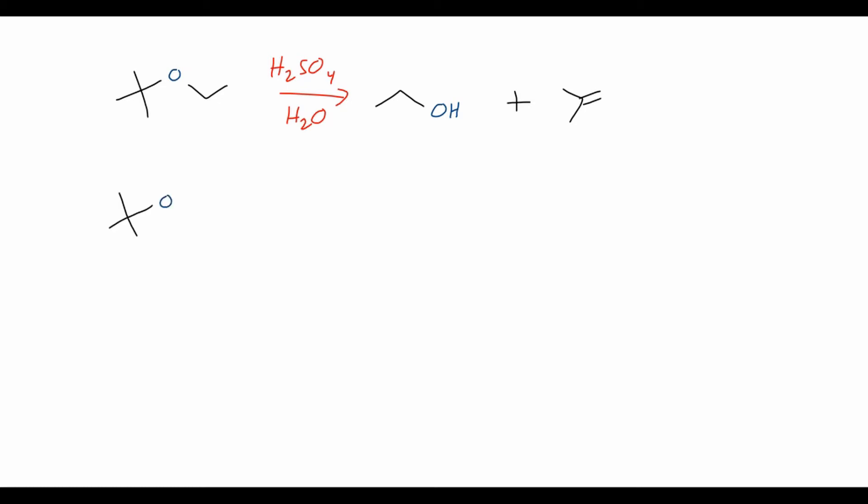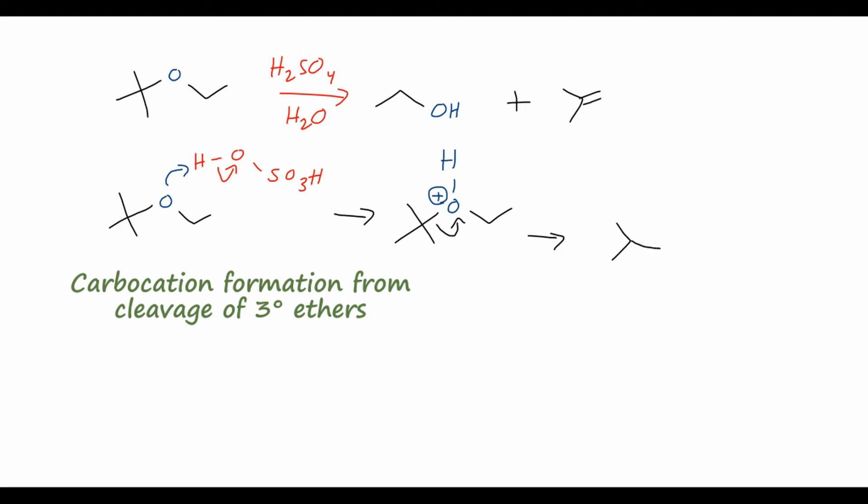Again, we start with our ether, and we do still have a strong acid in solution, so that oxygen can be protonated by the sulfuric acid. Now it'll give us the protonated ether. But now, since we have a tert-butyl group, which is a tertiary group, we can form a stable carbocation by the loss of this ethanol product. So we lose a molecule of ethanol and end up with the tert-butyl carbocation.